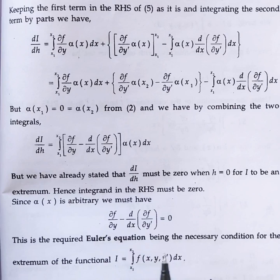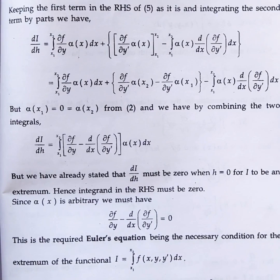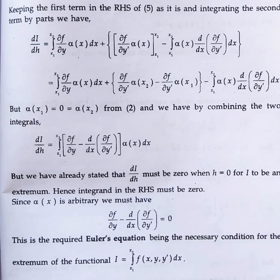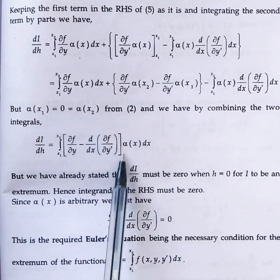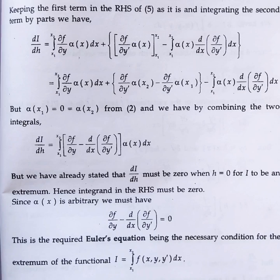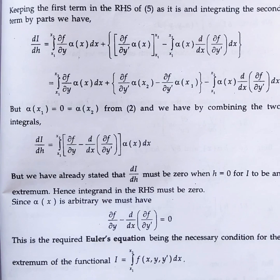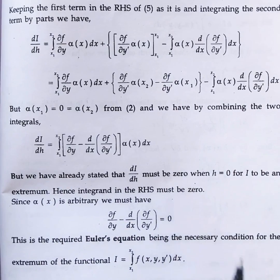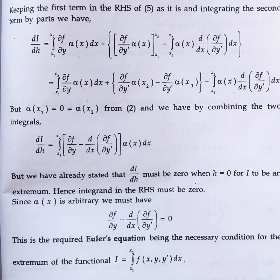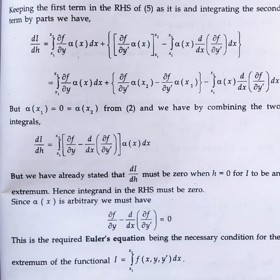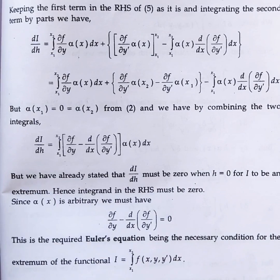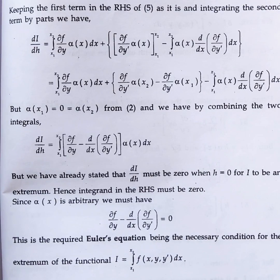This is the required Euler's equation and is the necessary condition for the extremum of the given functional. We started with a curve y(x), introduced a neighbouring curve, wrote the functional I, required dI/dh = 0, applied Leibniz rule, chain rule for partial derivatives, and finally integration by parts to derive Euler's equation. We will also solve problems based on this equation.